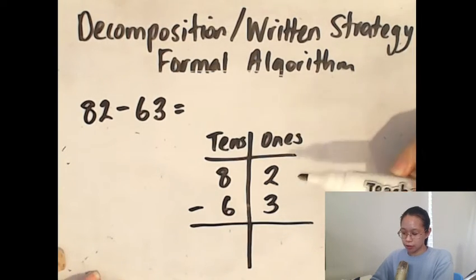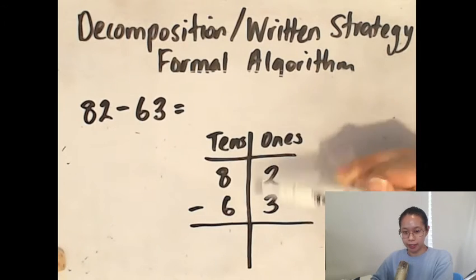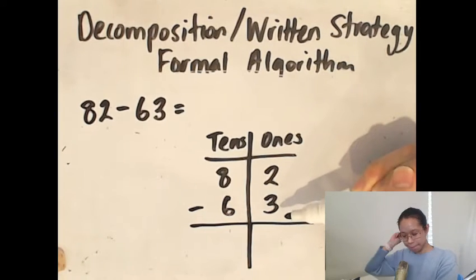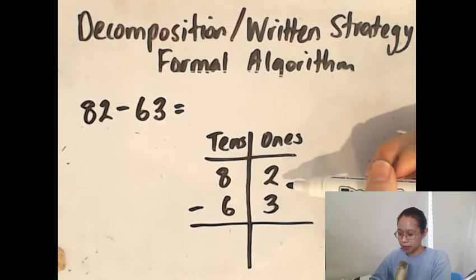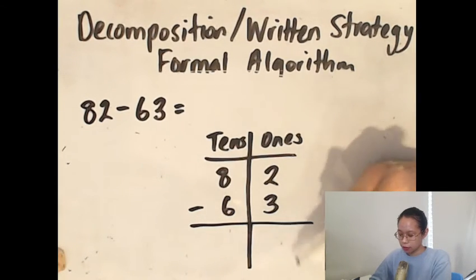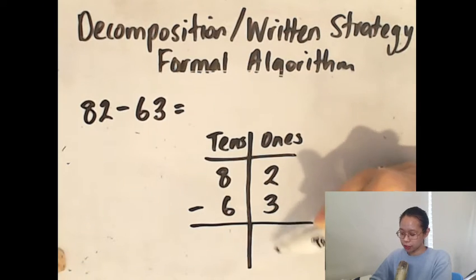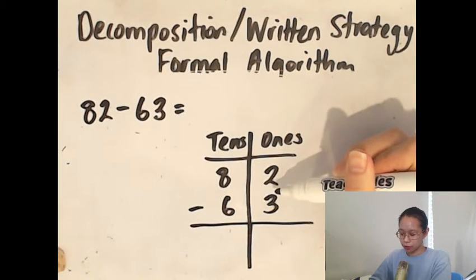We always start with the ones, so 2 minus 3. We can't really do 2 minus 3 without getting into fractions, so what we're going to do is go